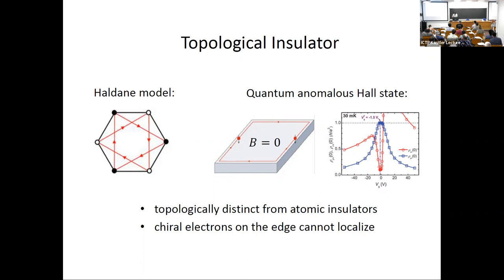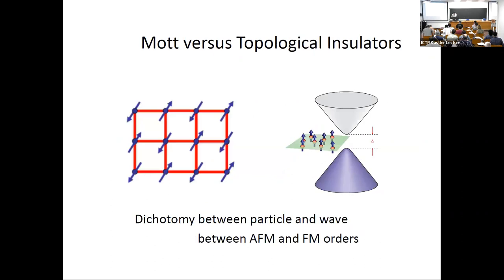This quantum anomalous Hall state was experimentally observed about ten years ago in magnetically doped topological insulators, where one sees quantization of the Hall conductance without any external field. I'd like to highlight the fundamental distinction between these two different states — the Mott insulator and topological insulator.